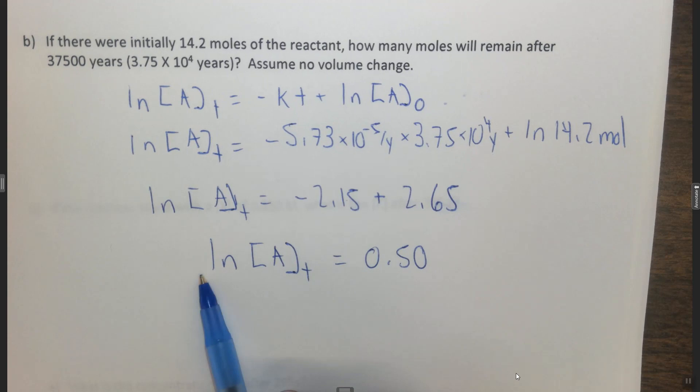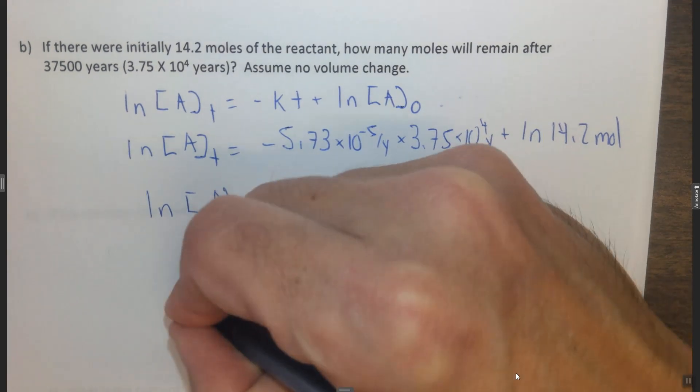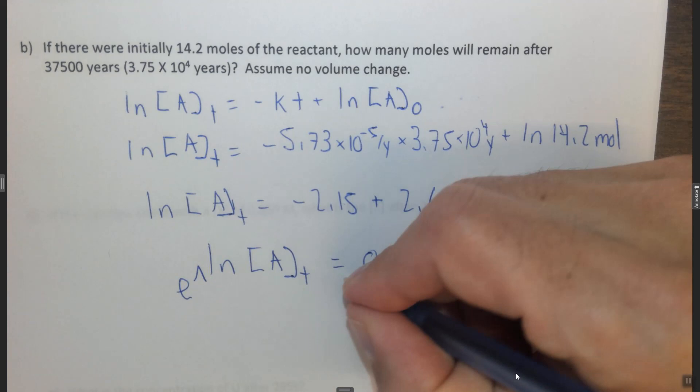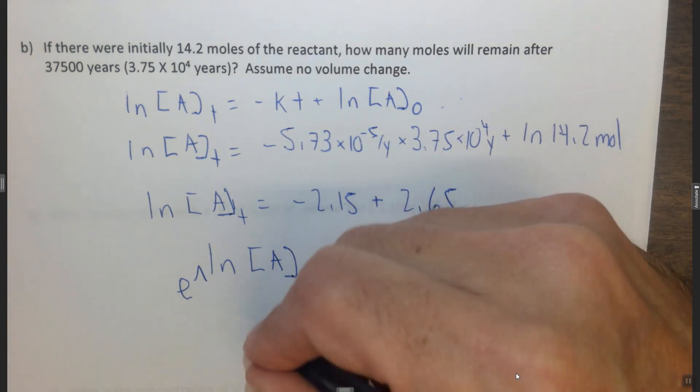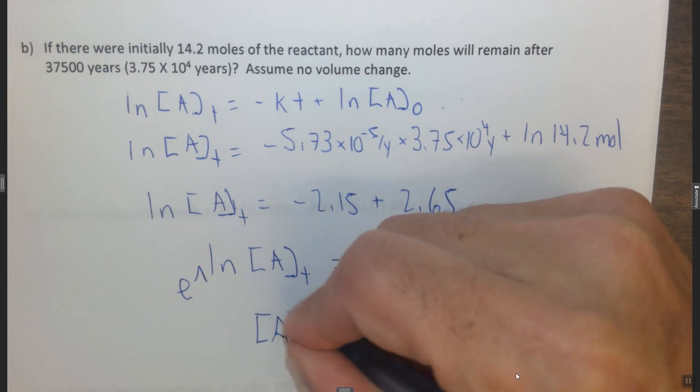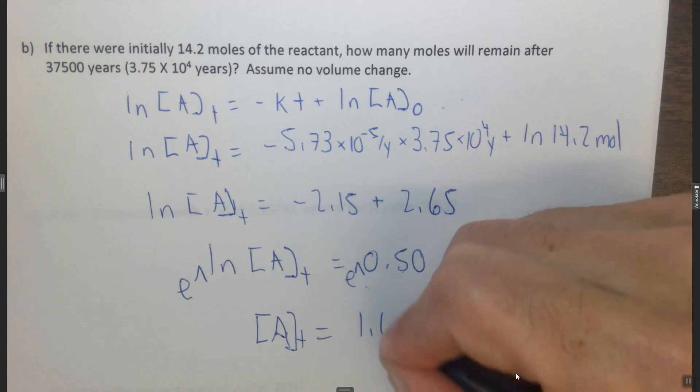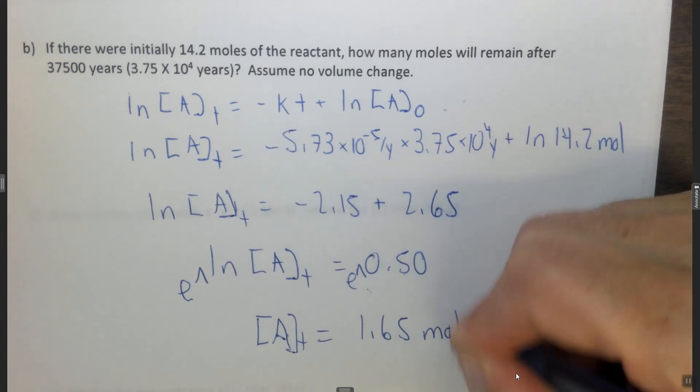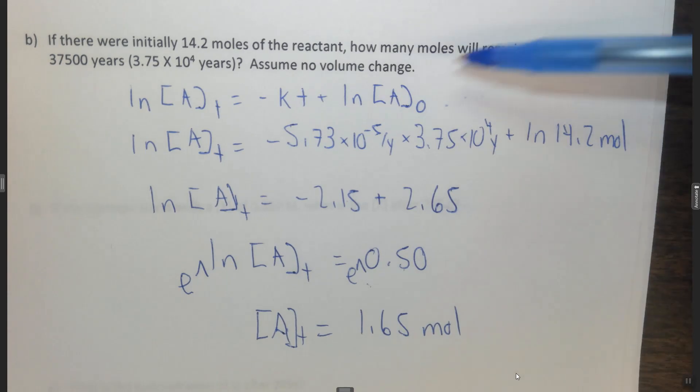To get rid of the ln you need to hit the shift usually, or the second key on your calculator, and you hit e to the ln, e to the 0.5. The e of the ln, the ln goes away, so you get the concentration of A at some t equals e to the 0.5, which is 1.65 moles. So after 37,500 years you'll have 1.65 of your original 14.2 moles remaining.